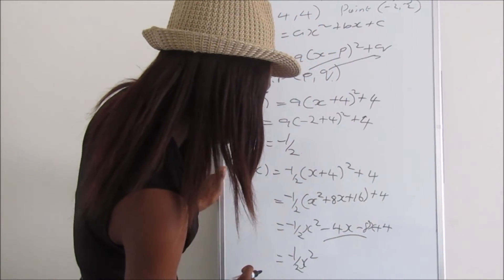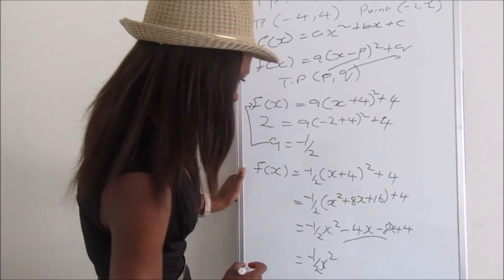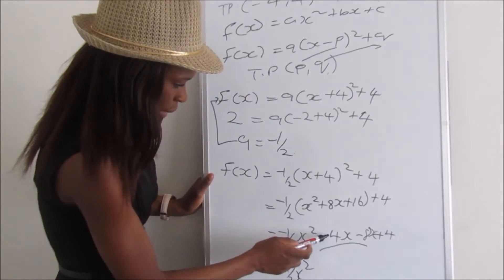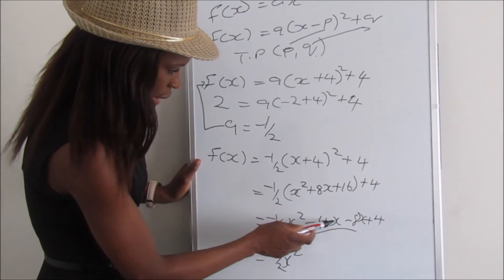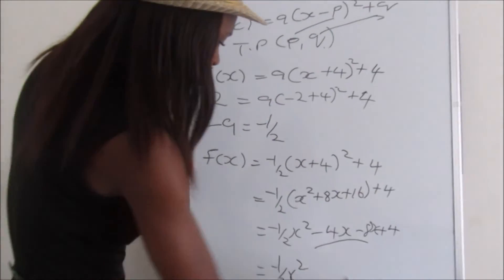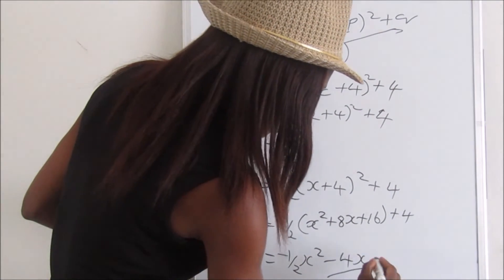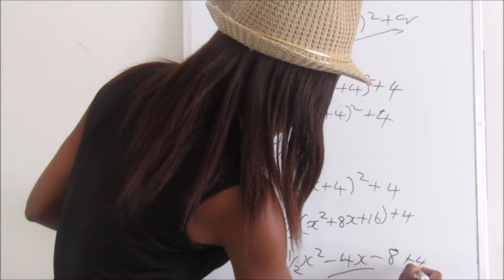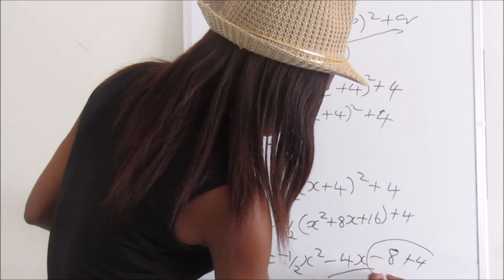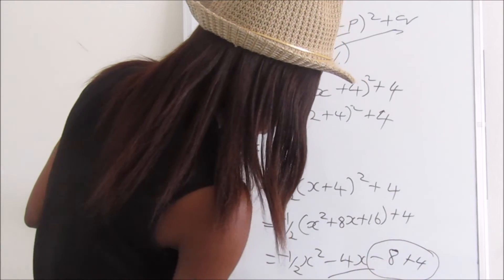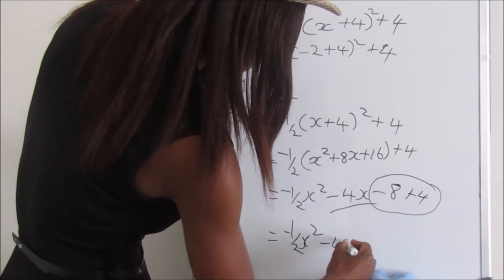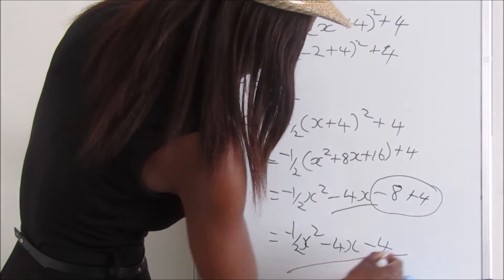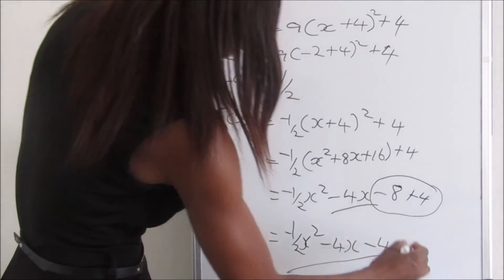Sorry, I made a mistake — actually it was right. It is -8 + 4, and adding these two together gives -4. So the final answer is f(x) = -1/2x² - 4x - 4.